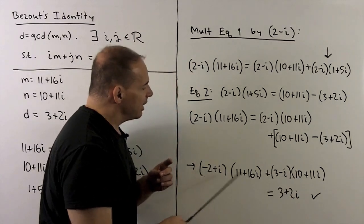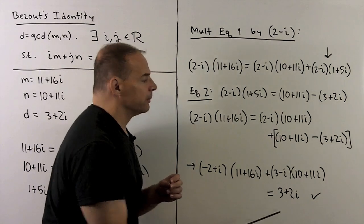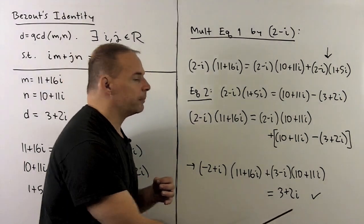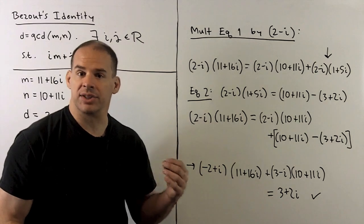We have i, j, m, n, and d. I'll leave it to you to verify that just by multiplying everything out. So Bezout's identity in this case.